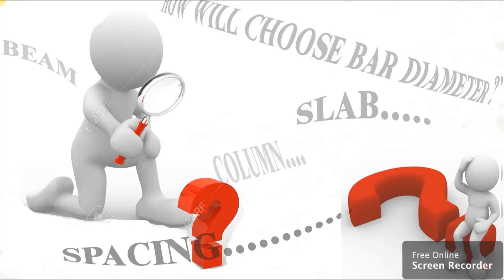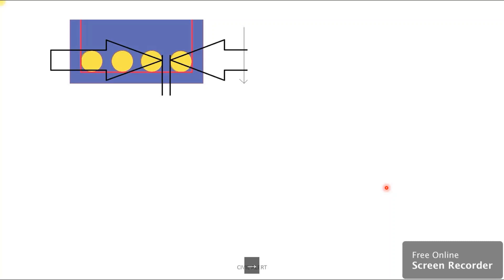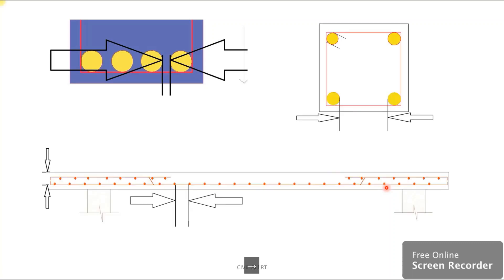In our discussion, we will address different structural components - that is the beam, column, slab, and foundation. These beams, columns, and slabs contain reinforcement. This is about the spacing.